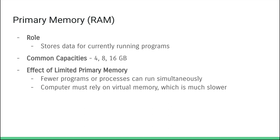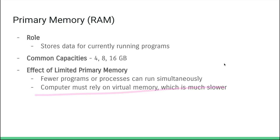Primary memory basically allows us to store data for currently running programs. In this topic we're looking at RAM — random access memory. Common capacities are 4, 8, or 16 gigabytes of RAM; a high-end gaming computer might have 32 gigabytes. If we don't have enough primary memory, fewer programs can run simultaneously and the computer must rely on virtual memory, which is much slower. Virtual memory takes data out of RAM because it's overloaded and puts it into secondary storage, then brings it back when needed. More primary memory is usually a good thing.